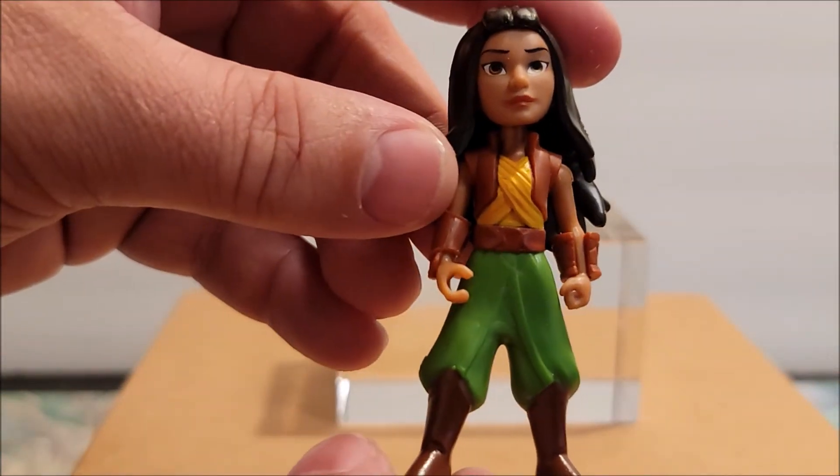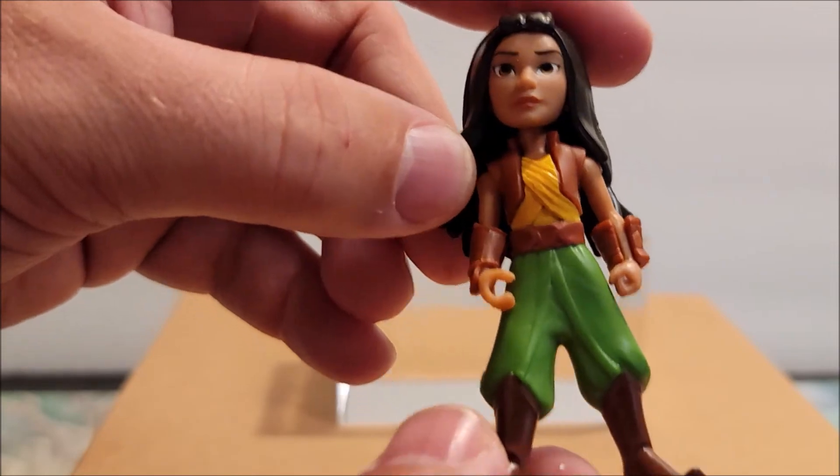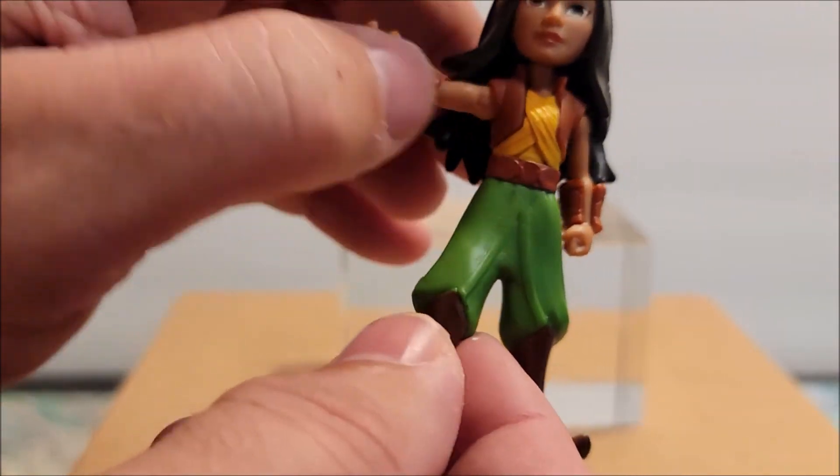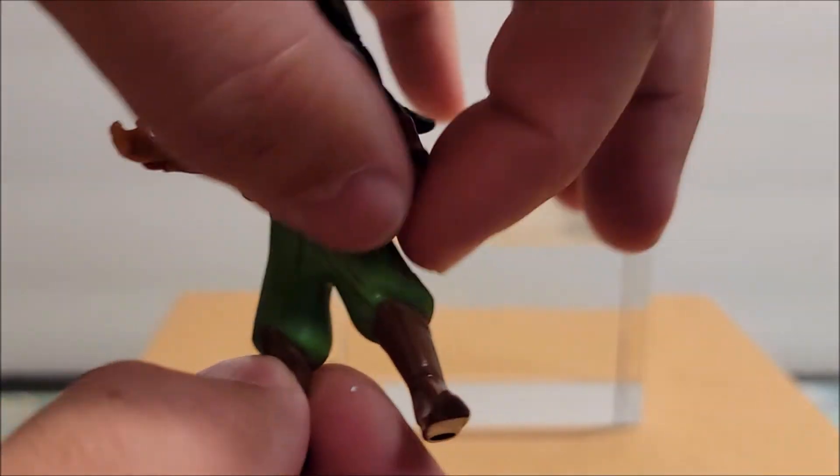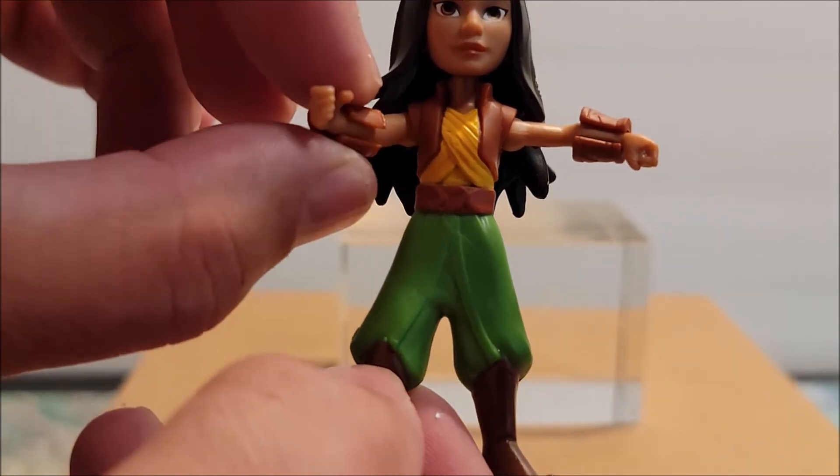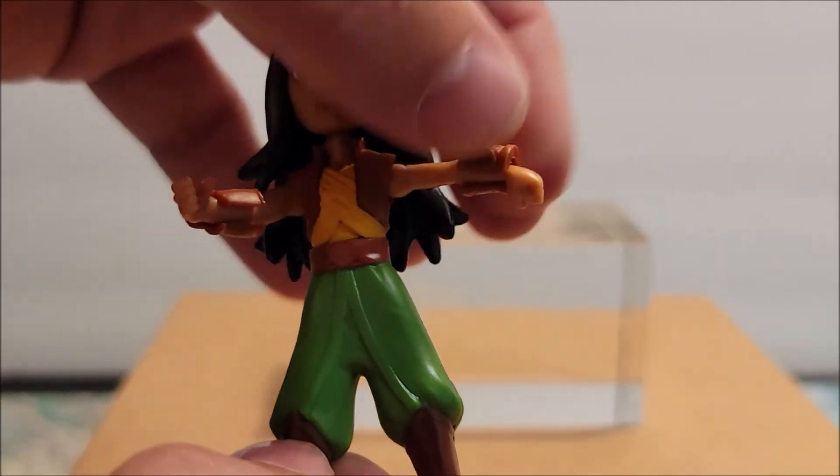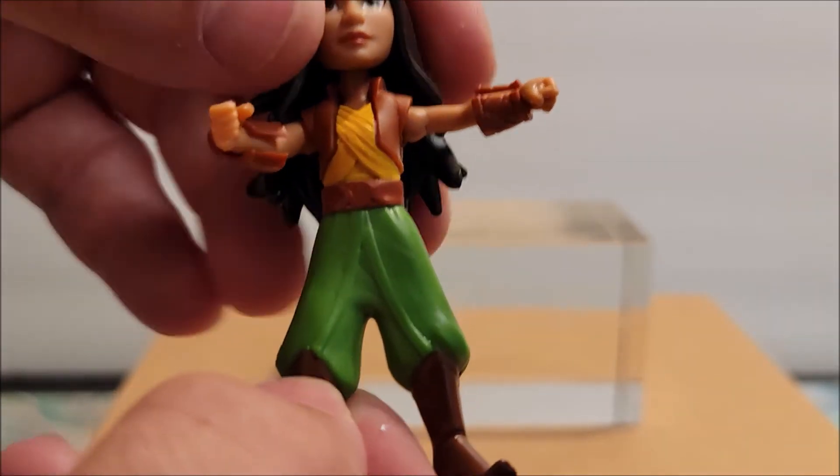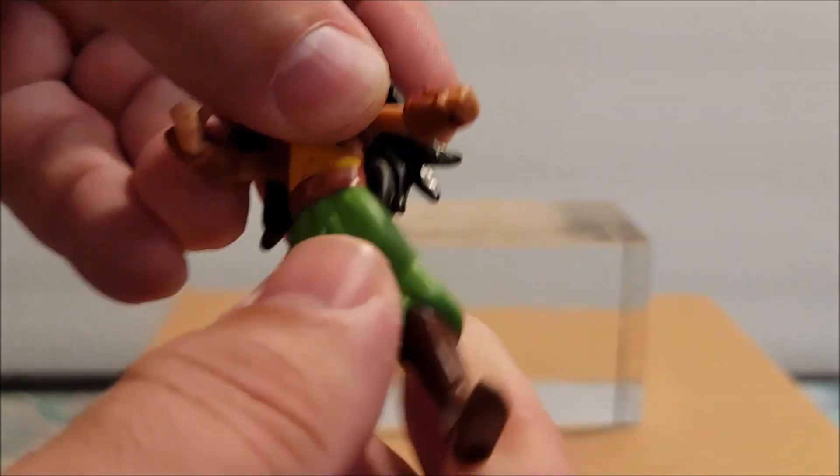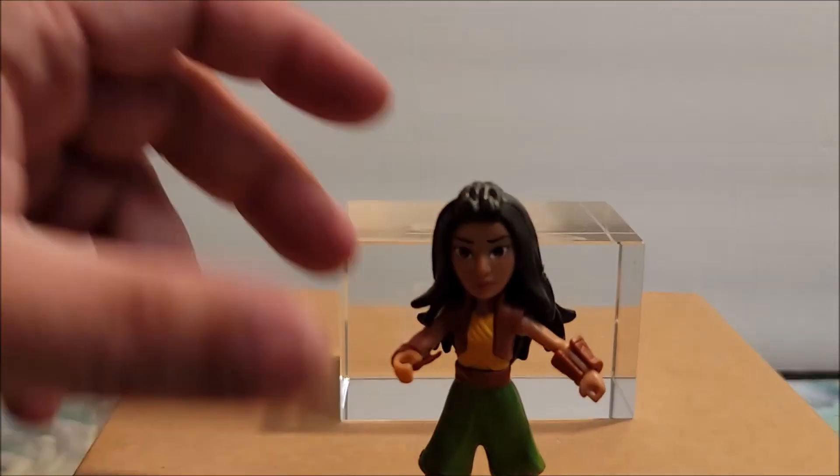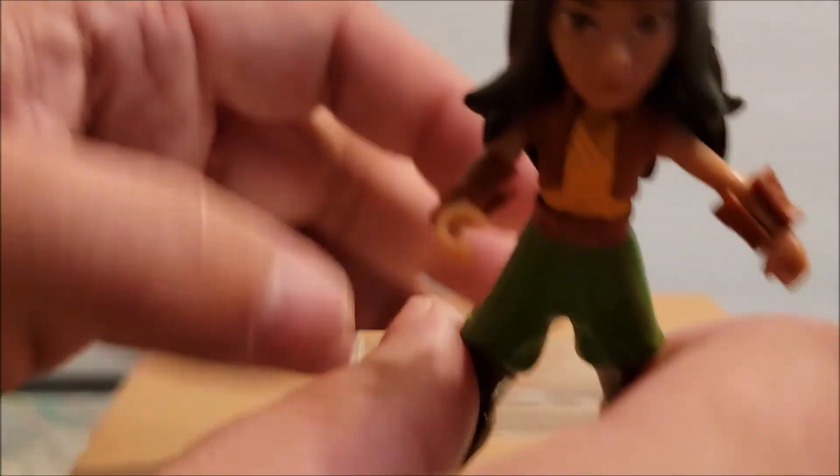There she is. Let's see here. Her arms, fully poseable. She has little teeny bracelets here. Her head, movable. Her waist, nope. So she stands by herself. We're going to move this up.